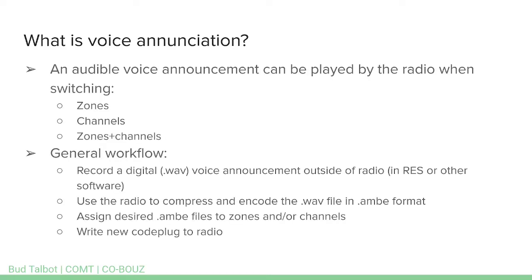Voice enunciation is an audible voice announcement that can be played by the radio when you're switching zones, channels, or both. In the intro video, I had it set just to announce the channel name when switching channels. Our general workflow is: record a digital voice announcement in WAV format outside of the radio — in RES or other software — then use the radio to compress and encode those WAV files into the AMBE format. AMBE is Advanced Multiband Excitation, which our digital radios use to encode and decode P25 digital audio. Then we assign those AMBE files to zones and/or channels back in RES and write that new code plug to the radio.